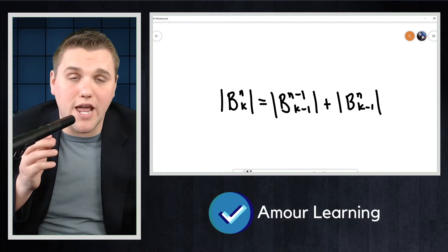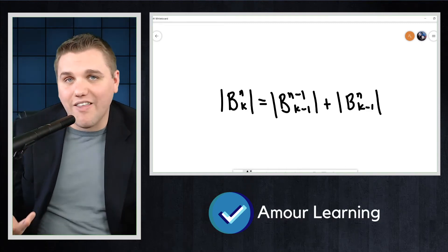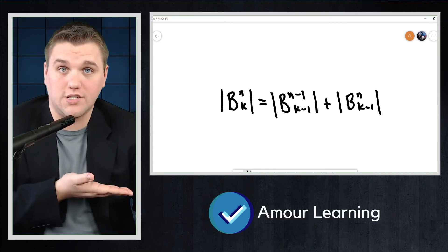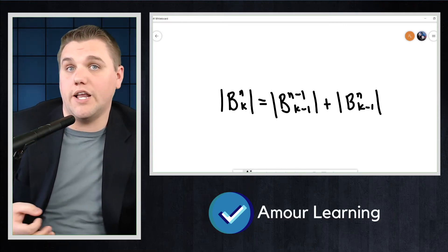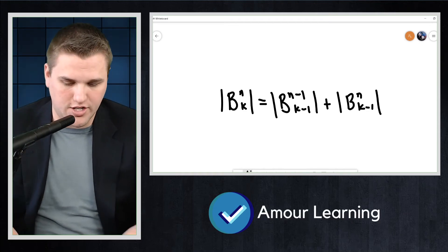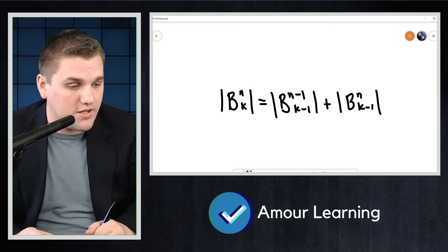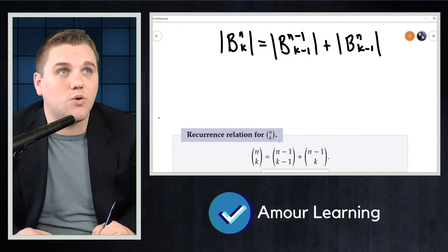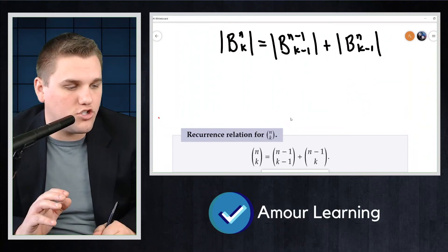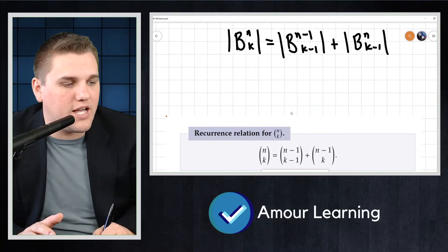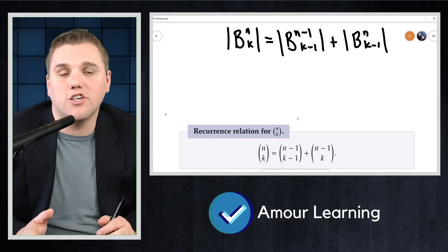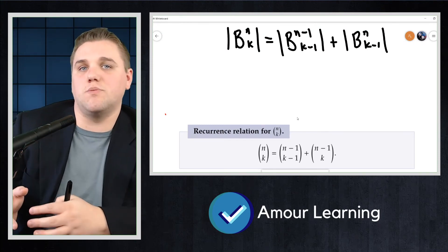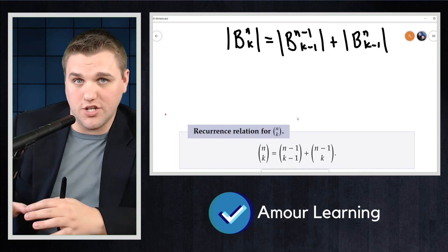Since bit strings and binomial coefficients are analogous, this means that the recurrence relation for bit strings can also be applied to binomial coefficients. This means that n choose k is equal to (n-1) choose (k-1) plus (n-1) choose k. So it's the same concept as bit strings, but can be written in terms of binomial coefficients notation.